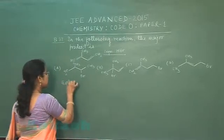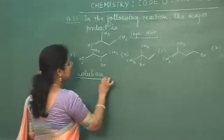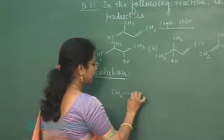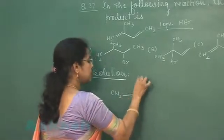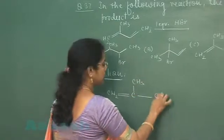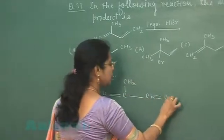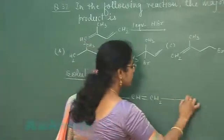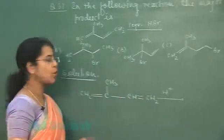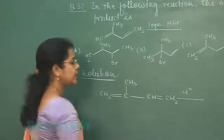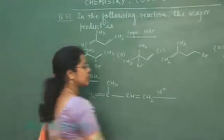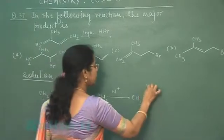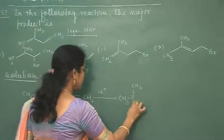We will write the equation. The compound is CH2=C(CH3)-CH=CH2. Addition of HBr is an electrophilic addition, so the first step will be addition of H+ ion. The H+ ion will take place at the terminal carbon atom, which will result in the formation of a tertiary carbocation.